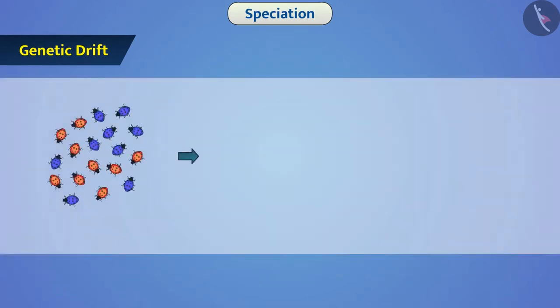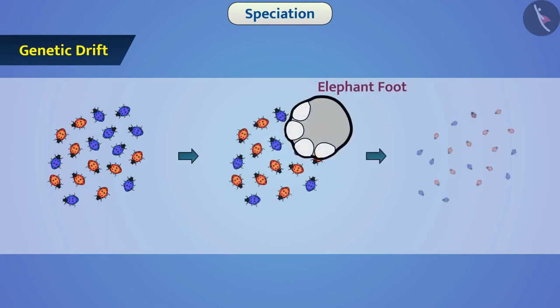If the population of the organism is large, then there is negligible impact of random events on the alleles' frequency. Hence, in such cases, we cannot see genetic drift.